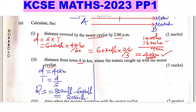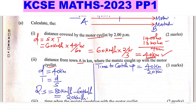Time taken to catch up = relative distance ÷ relative speed = 40 kilometers ÷ 20 kilometers per hour = 2 hours. So two hours is the time taken to catch up.